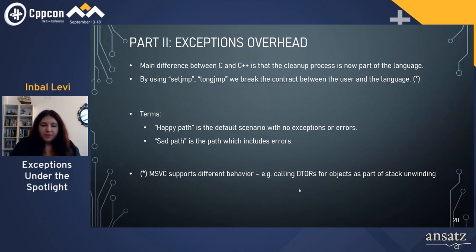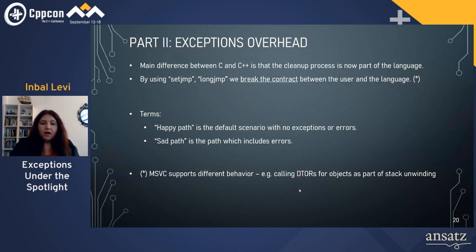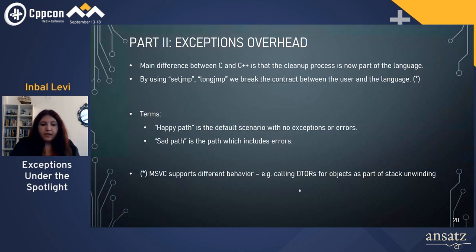Exception overhead: the main difference between C and C++ is that the cleanup process is now part of the language — it includes structures and destructors. By using setjmp and longjmp we break the contract between the user and the language, so we clearly can't use them the same way as in C. A happy path is the default scenario with no exceptions thrown, and a sad path is the path which includes an error. We're going to focus on GCC particularly, though other things exist as well.